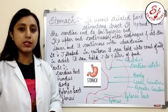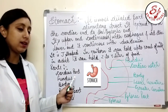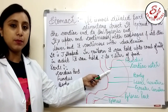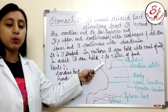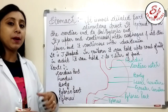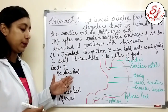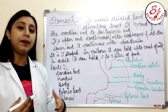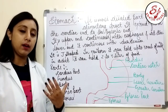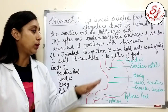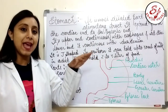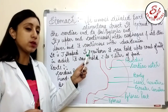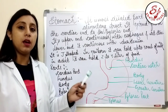Let's talk about the parts of the stomach. The first one is the cardiac part, which is the upper portion of the stomach connecting to the lower portion of the esophagus. It is called the cardiac part because it is located just below the pericardial sac.